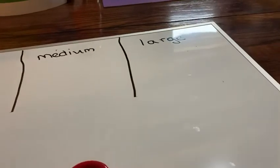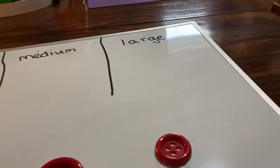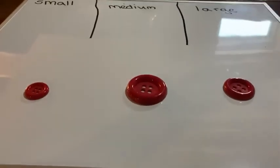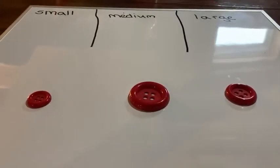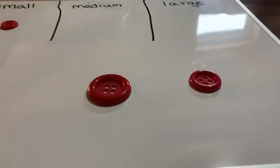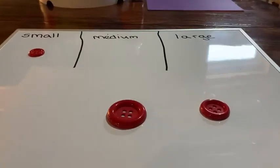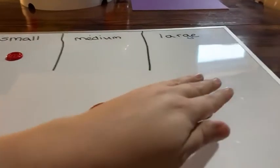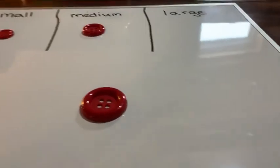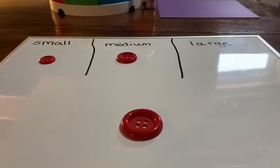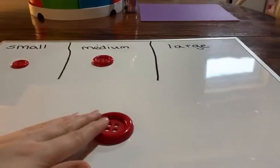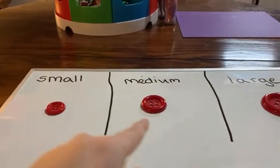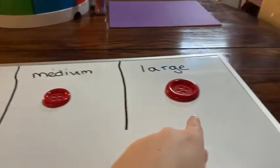So let's look at our buttons. Which one of our buttons is small? Small. Which one of our buttons is medium? And which one of our buttons is large? Large. Small. Medium. Large.